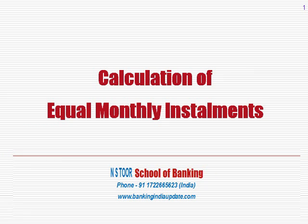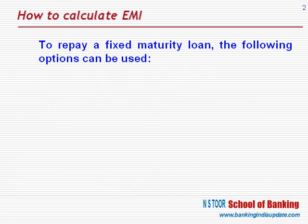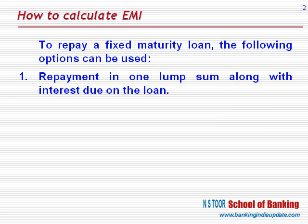Hello friends. Calculation of Equal Monthly Installments. Whenever a person is raising a loan which has a fixed maturity, he has the following options to repay that loan. One option could be repayment of the loan in one lump sum along with interest due on the loan — he makes one payment at end of the maturity and that payment includes principal as well as interest.